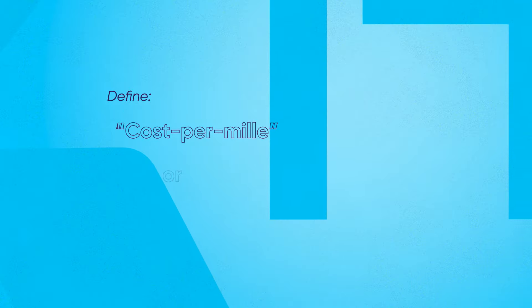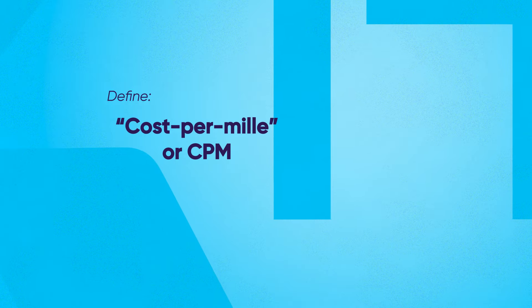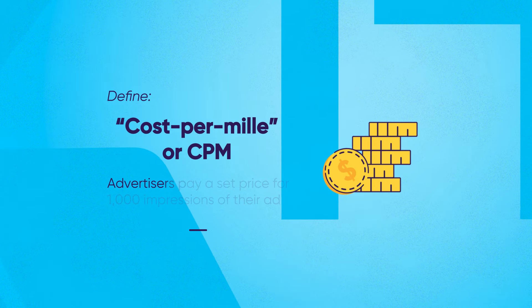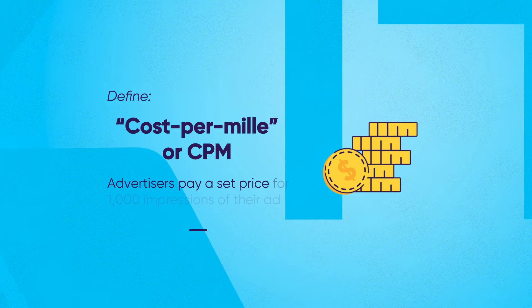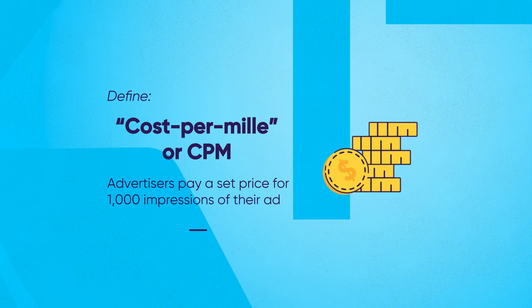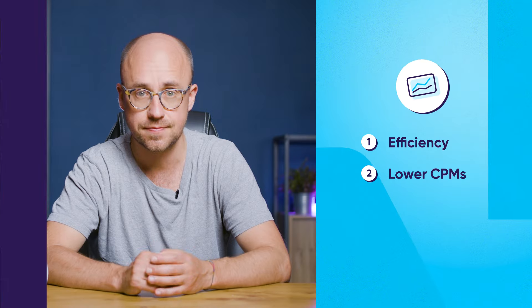Most programmatic deals use a CPM — that's where advertisers pay a set price for 1,000 impressions of their ad.